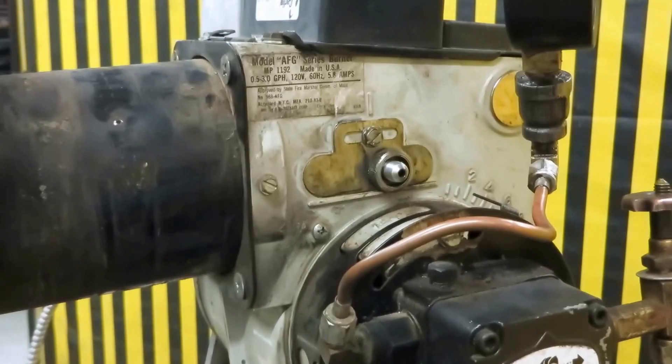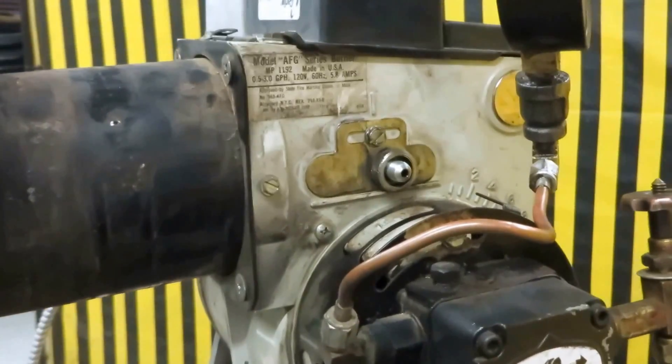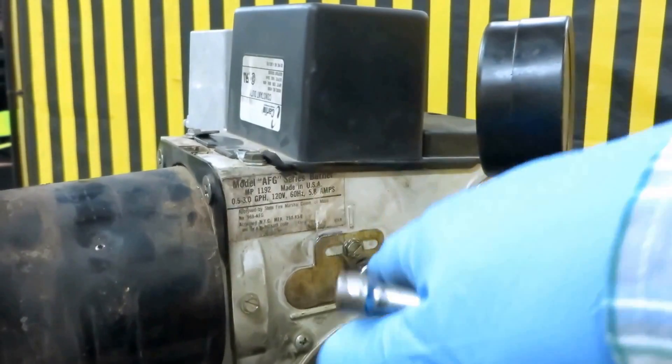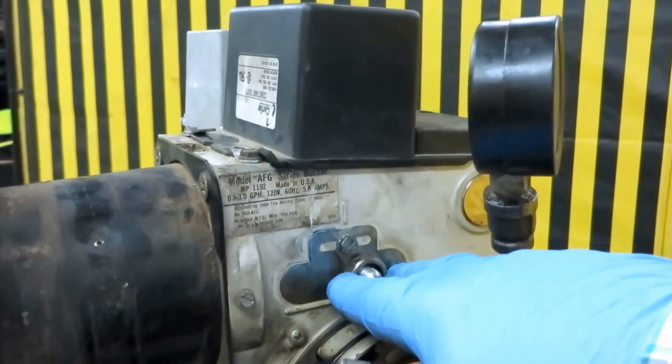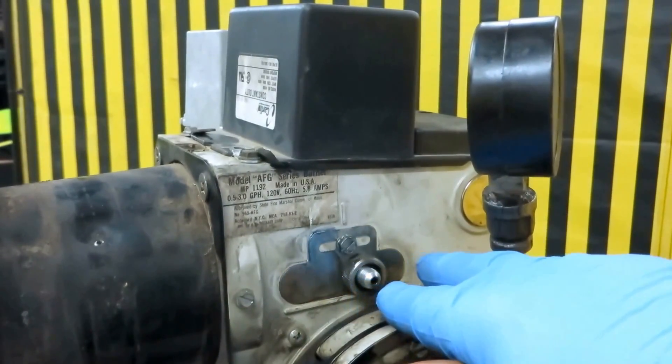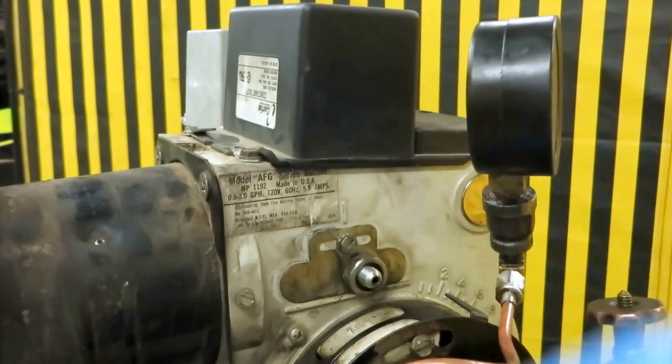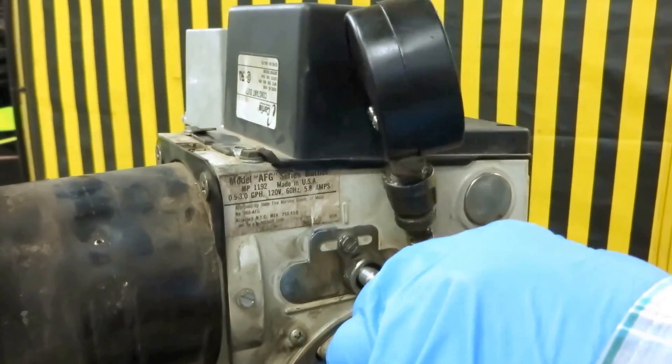All right guys, next thing I want to talk about is the draw assembly. That's where the nozzle is. You got the draw assembly here, you got your jet tube coming off your pump that will go into here.